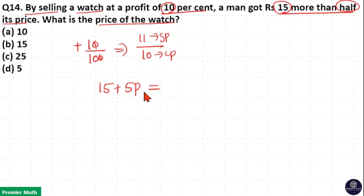So 15 plus 5 parts is the selling price here, that is 11 parts. So the total selling price is 11 parts. Then he got 15 plus half of its cost price, which is equal to the selling price.